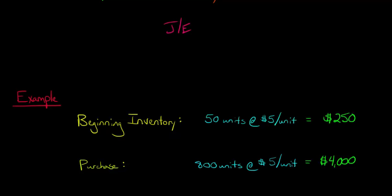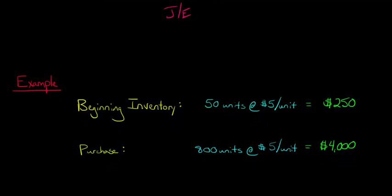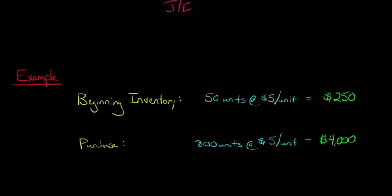Now let's think about the journal entry and how that's going to play out. Remember we said that we're going to continuously update this inventory account. Now inventory is an asset, so it's going to increase with a debit. So we're going to debit inventory for $4,000. Now what are we going to credit?